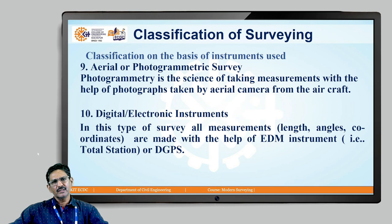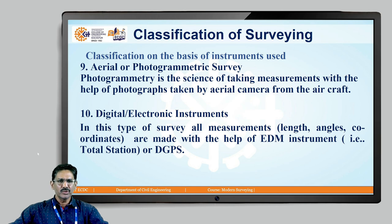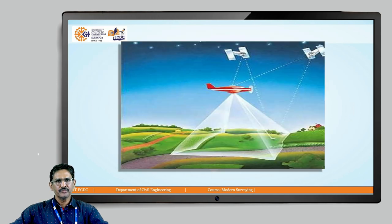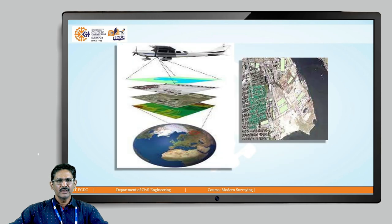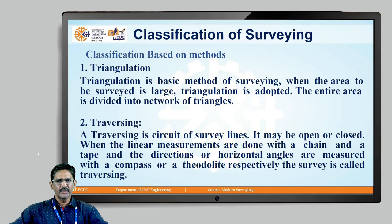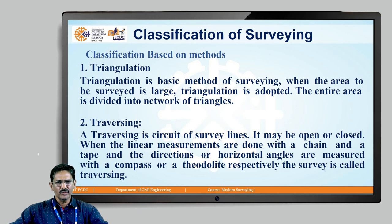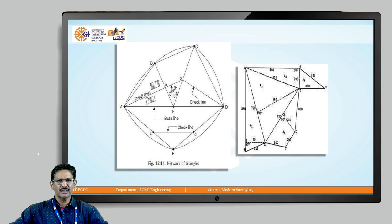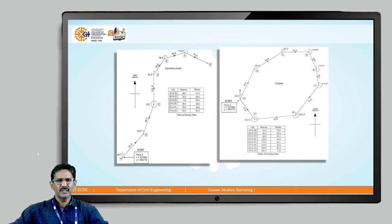Aircraft is another instrument that falls under modern surveying. Digital instruments such as the EDM, the total station and DGPS are the most modern equipment used today. You can see the aircraft, the planes, the total station, and it consists of a prism — these are the modern equipment. Based on methods, we can say triangulation and traversing: you convert the whole area to be surveyed into triangles, or into polygons in the case of traversing.